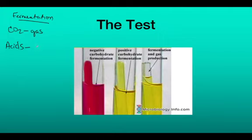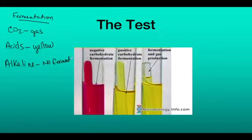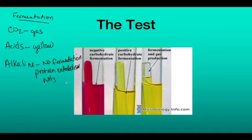Acid production is detected by the presence of acids or alkaline conditions, and we can visualize this with the aid of phenol red — the pH indicator placed in the media. In acidic conditions, phenol red will turn yellow. This is the same pH indicator used in the MSA, the mannitol salt agar. In alkaline conditions — which occur when bacteria are incapable of fermenting sugars — bacteria break down proteins in a process known as protein catabolism. In protein catabolism, NH3 or ammonia is produced, which is a strong base, so the alkaline conditions will turn the tube a dark pink.